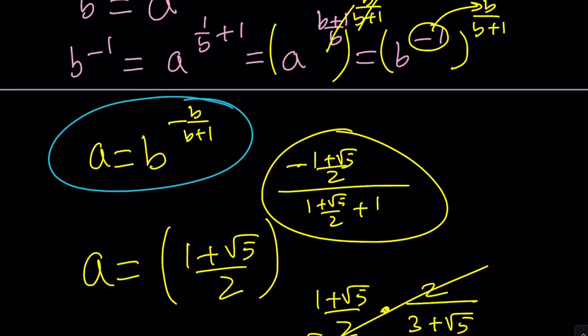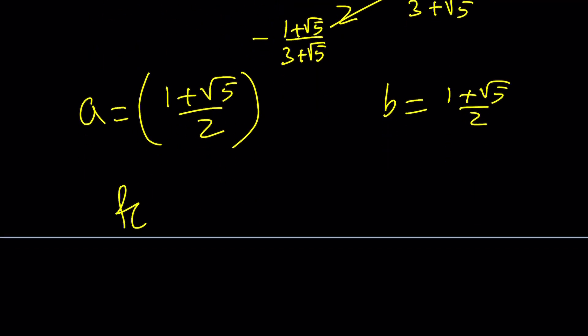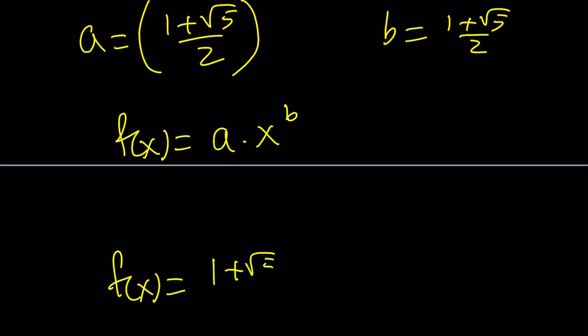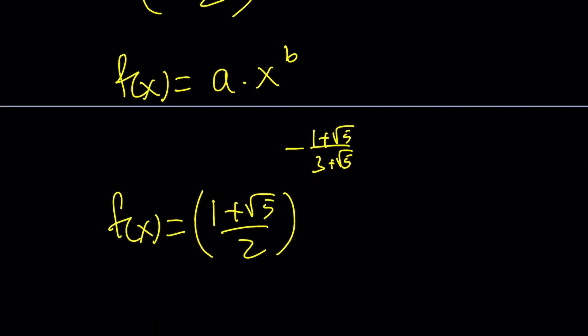And, with that information, since a, what is b, 1 plus root 5 over 2, I forgot what b was, because a is so complicated. And, now, since we assume that f(x) is supposed to be in the form of a times x to the power b, now, we can go ahead and write our function as 1 plus root 5 over 2 to the power with the negative sign 1 plus root 5 over 3 plus root 5 times x to the power 1 plus root 5 over 2. And, don't you love that? That will be one of the answers. The other one is yours.